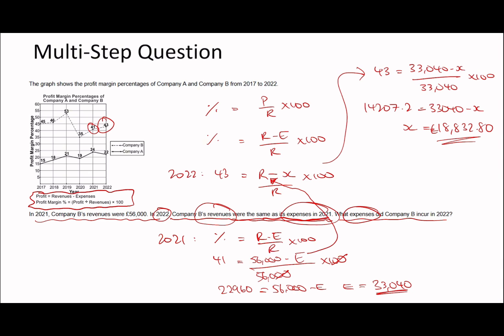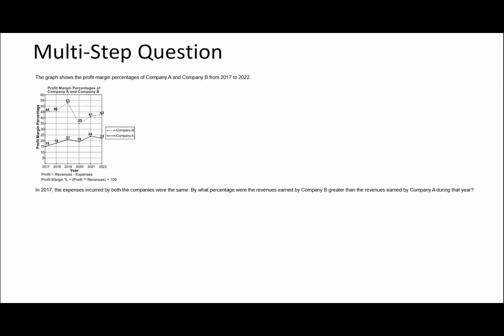It was difficult because you had to apply this equation to both parts — 2021 and 2022. The key realization was that when I set up 2022 first, I was missing two variables: R (revenue) and X (expenses). Since R had to be worked out separately, I had to set up the 2021 equation as well. That's the multi-step logic here.